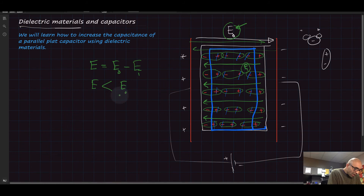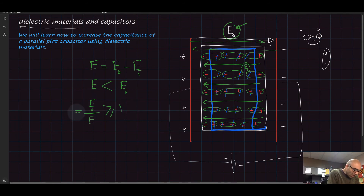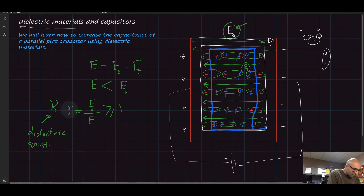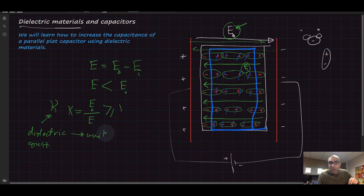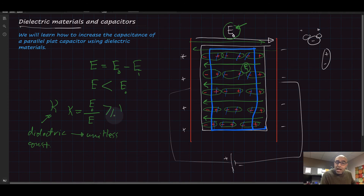If we take E₀ divided by E, we always get a number that is bigger than or equal to one. They defined this number and called it kappa — the dielectric constant. Kappa is defined as E₀ over E, and it is unitless because you are dividing the same quantity with the same units. Kappa is mostly greater than one.